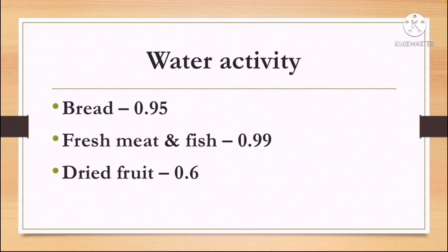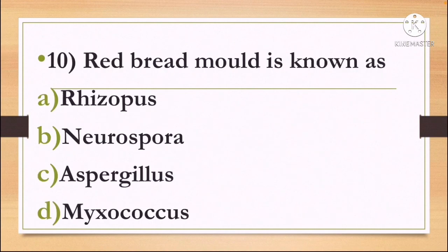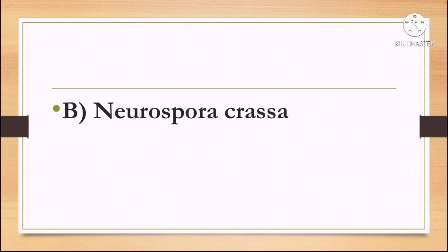Next question: Red bread mold is known as — Option A: Rhizopus, Option B: Neurospora, Option C: Aspergillus, and Option D: Myxococcus. The correct answer is Option B — Neurospora crassa is red bread mold.